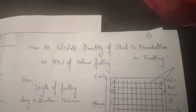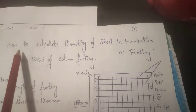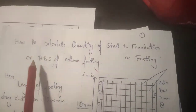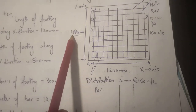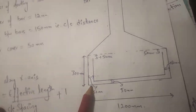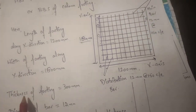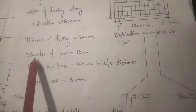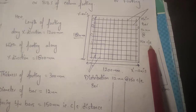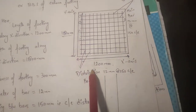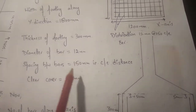In the previous video I discussed the difference between main bars and distribution bars. Today's topic is how to calculate quantity of steel in a foundation or footing — the BBS of footing. Suppose we have a footing of 1200 mm by 1800 mm, with a thickness of 300 mm. The diameter of main bars and distribution bars is 12 mm at 150 mm center-to-center spacing for both.